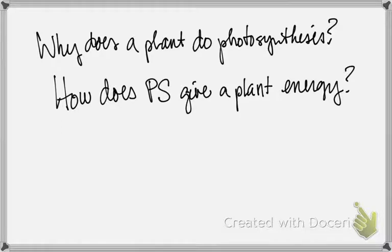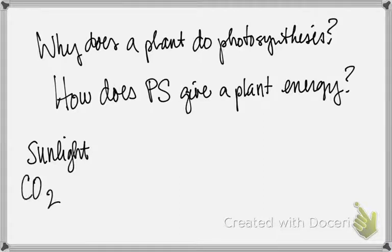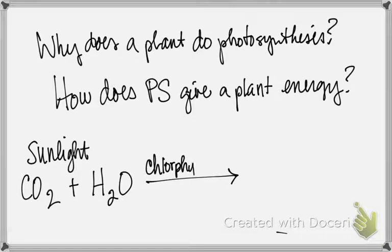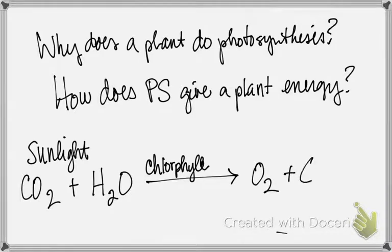Where does the energy come from in photosynthesis? The sun. So we have sunlight energy — but is that all a plant needs? No. What else is needed? Carbon dioxide, water, and sunlight, and a really important pigment — chlorophyll, which is located inside of a chloroplast. And what gets produced? Oxygen and sugar.